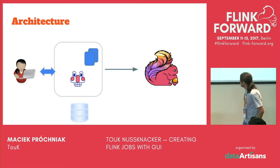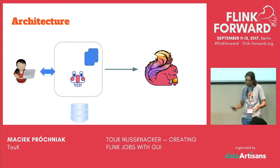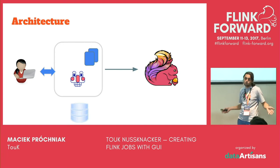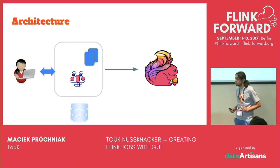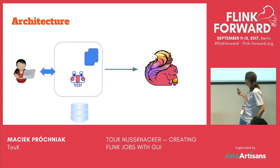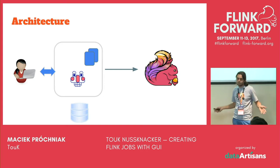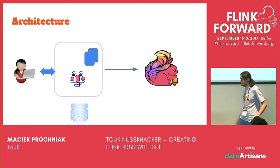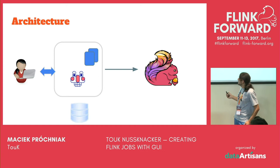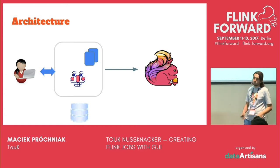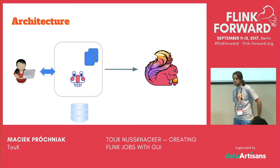How does it work? The architecture is quite simple. NuSnacker is just a web application that you deploy wherever you like. There's a small embedded database and the user uses it. It talks to Flink via the normal Flink client API. When you deploy NuSnacker as a web app, you also have to deploy your own custom jar with models, NuSnacker libraries, and so on.